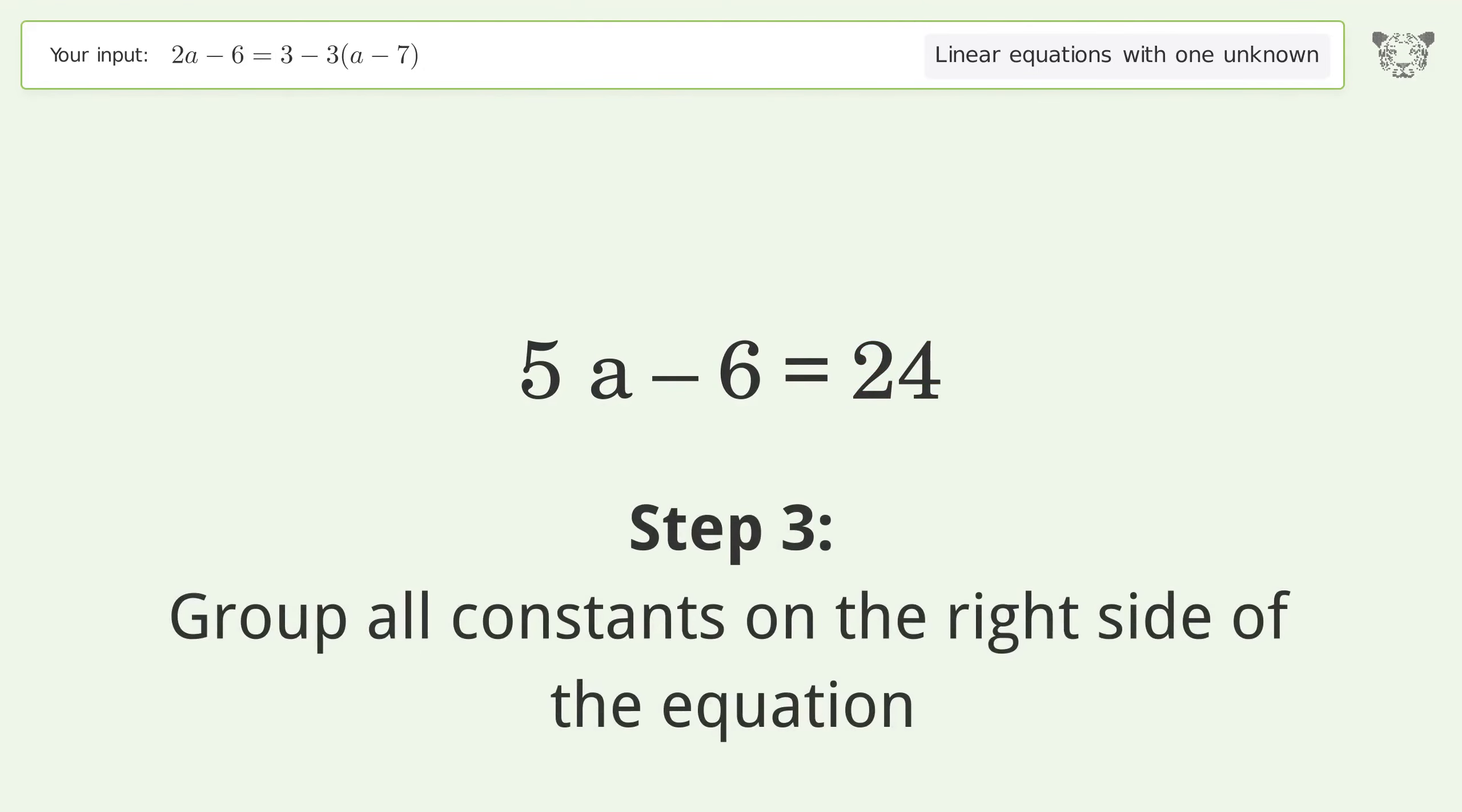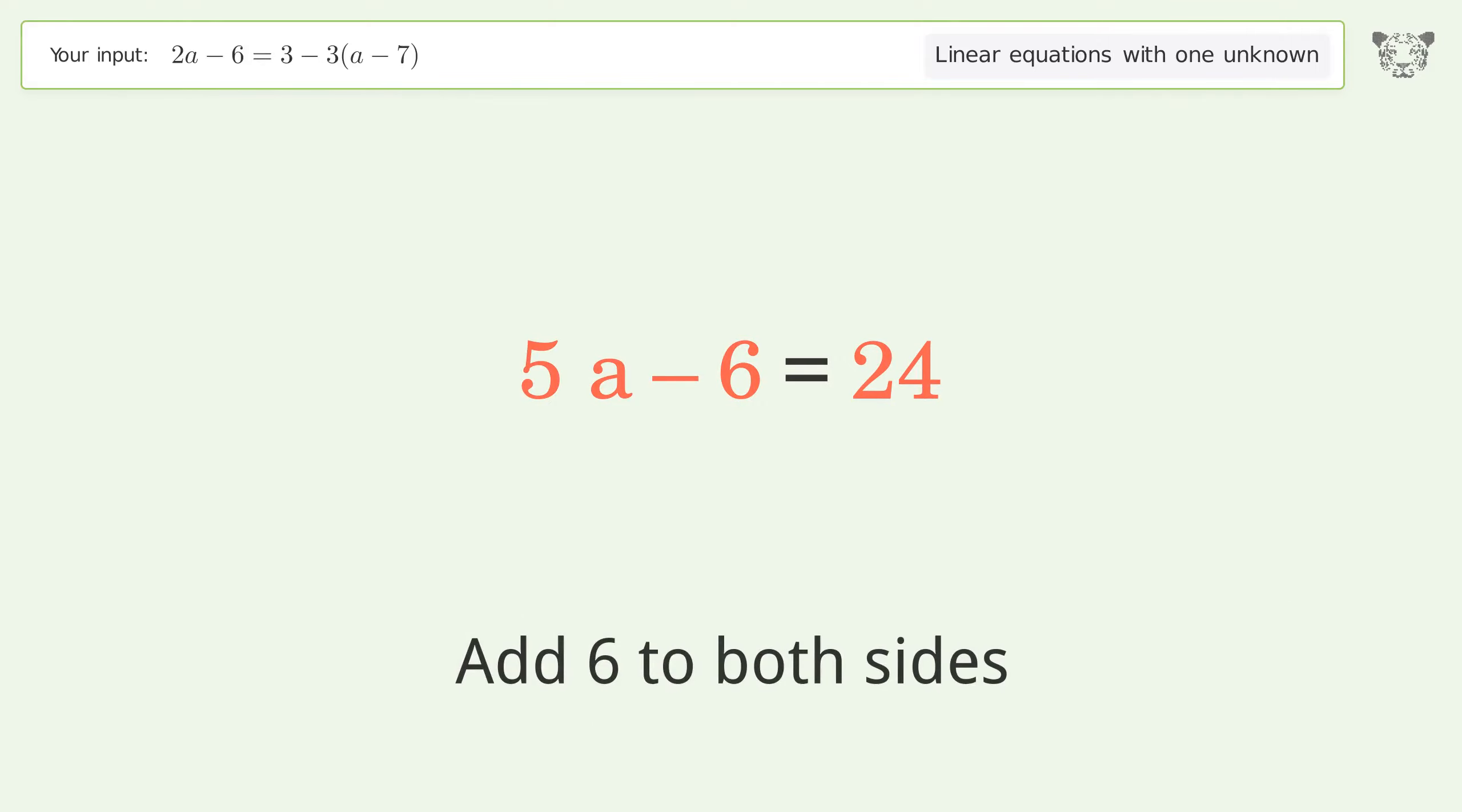Group all constants on the right side of the equation. Add 6 to both sides. Simplify the arithmetic.